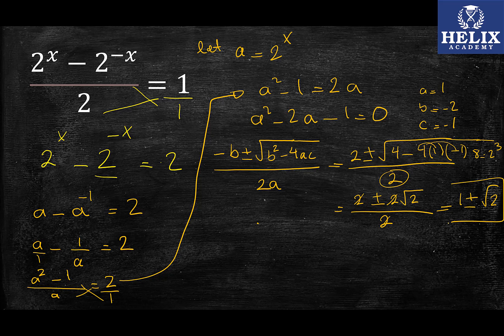So that is what a is equal to. So I have 2 possibilities for a, therefore I have 2 possibilities for 2^x. So then I'm going to write 2^x = 1 + √2, or 2^x = 1 - √2.